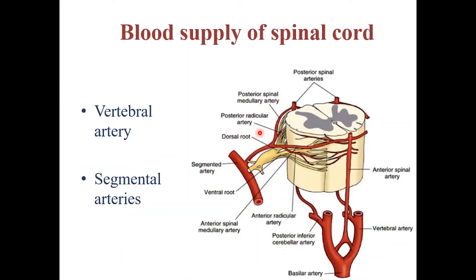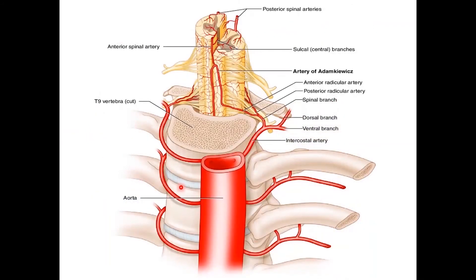The spinal cord has 2 main sources of blood supply. The vertebral artery, which gives the anterior spinal artery and 2 posterior spinal arteries running along the length of the spinal cord. The second source is the segmental arteries, which arise from the aorta and enter the spinal cord through the intervertebral foramina. They reinforce the anterior and posterior spinal arteries and divide into terminal branches called the radicular arteries, which supply the nerve roots.